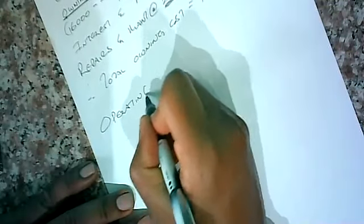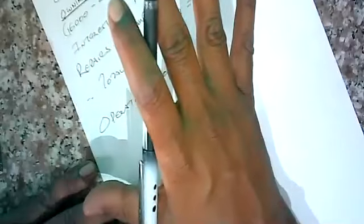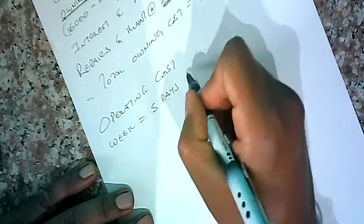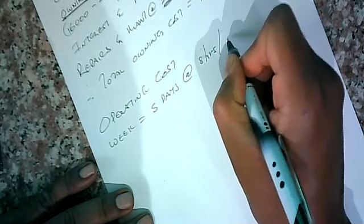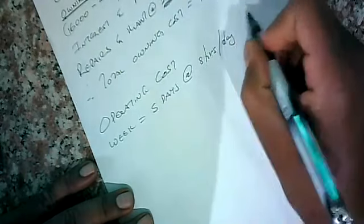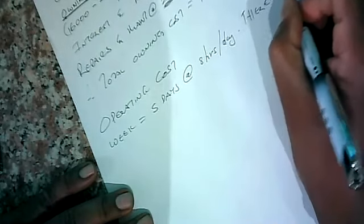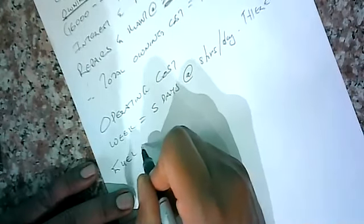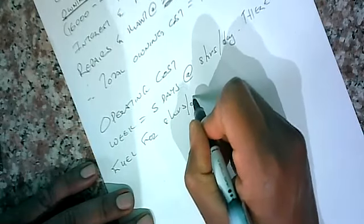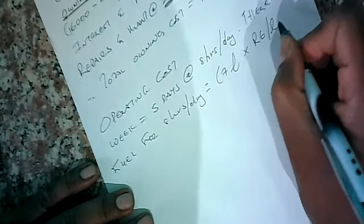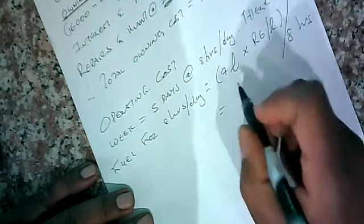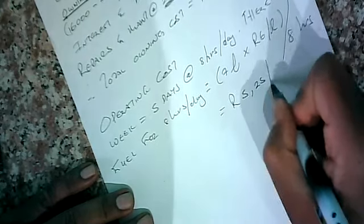Operating cost for the same machine. Before we start the calculation, let's get to the fine print: our week equals five days at eight hours per day. Therefore, fuel for eight hours per day: seven liters times six rand per liter, divided by eight hours, gives us five rand and 25 cents per hour.